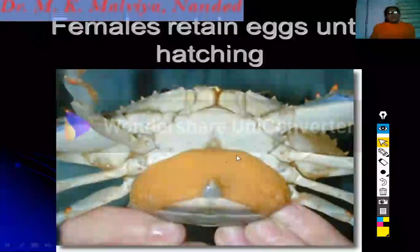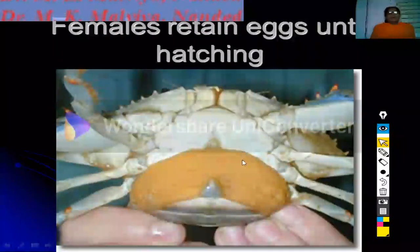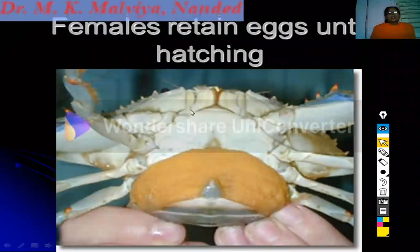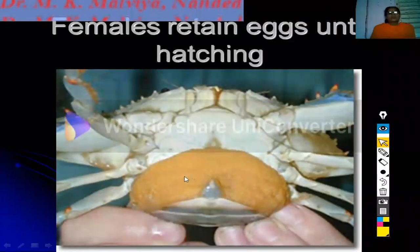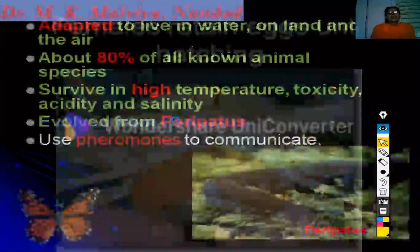This shows how one animal parasitizes another animal. This is the crab ventral side, and another arthropod has parasitized this crab from the ventral side.